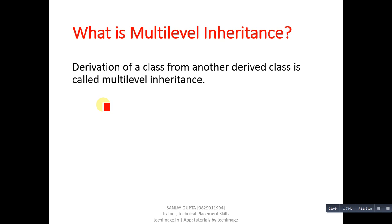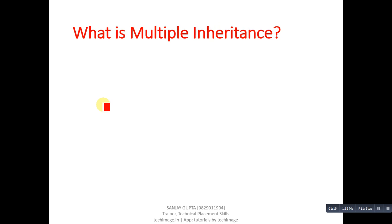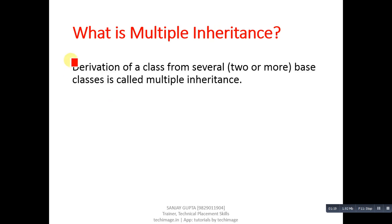Next question: what is multilevel inheritance? Derivation of a class from another derived class is called multilevel inheritance. Next question: what is multiple inheritance? Derivation of a class from several — that is, two or more — base classes is called multiple inheritance.